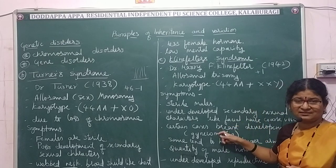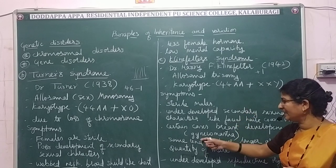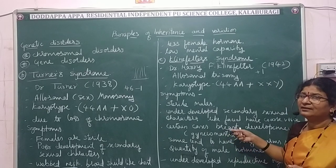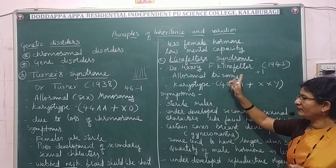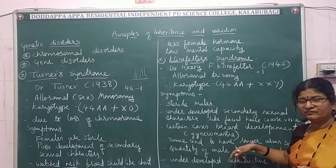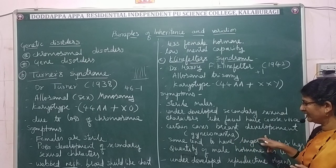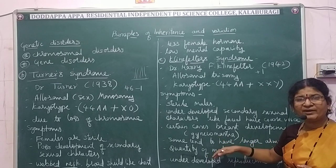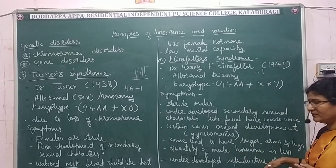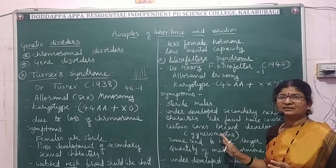In some Klinefelter syndrome individuals, breast enlargement is seen, which is a female character. This condition is called gynecomastia and is an important distinguishing feature. Affected individuals also tend to have longer limbs, longer forearms and legs than normal. The quantity of male sex hormone is less, and the testis is underdeveloped.